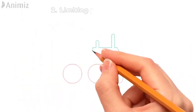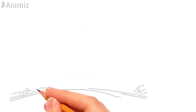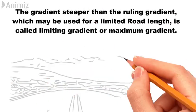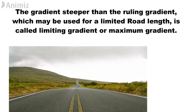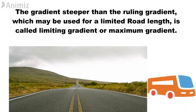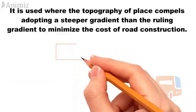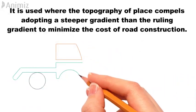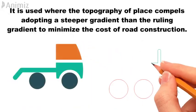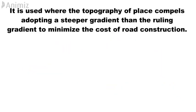2. Limiting gradient. The gradient steeper than the ruling gradient, which may be used for a limited road length, is called limiting gradient or maximum gradient. It is used where the topography of the place compels adopting a steeper gradient than the ruling gradient to minimize the cost of road construction.